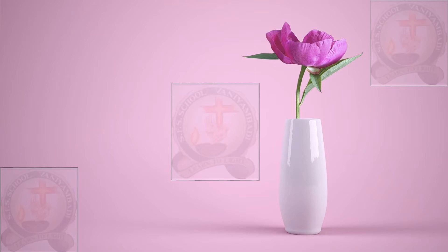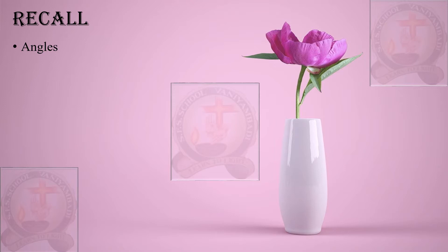Before today's topic, let us recall what we have learned previously. Let us recall about angles. To understand angles, let us take one example. We have a ray here — let us call this the initial ray. It is called a ray because it has a starting point but no endpoint.